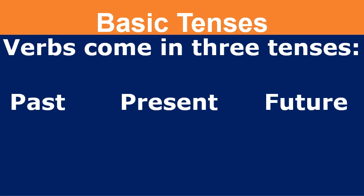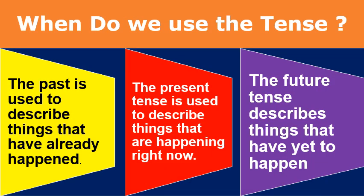Now let us look at the basic tenses. Verbs come in three different tenses: present tense, past tense, and future tense. The past tense is used to describe things that have already happened. The present tense is used to describe things that are happening right now. The future tense describes things that have yet to happen. This is the basic knowledge you need to have.